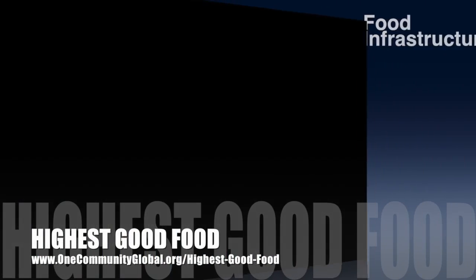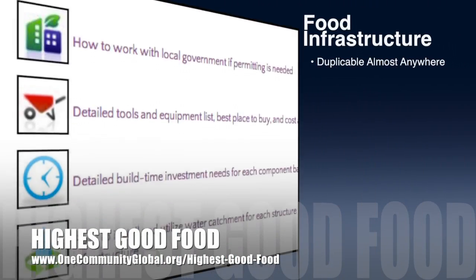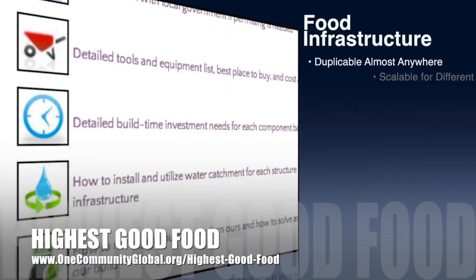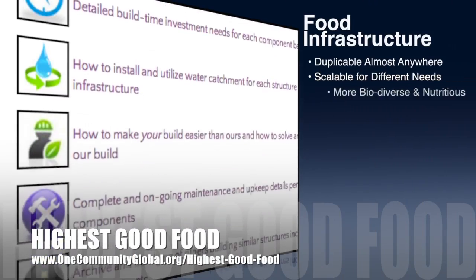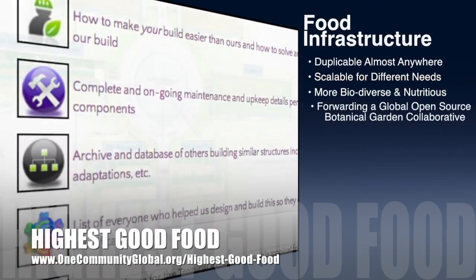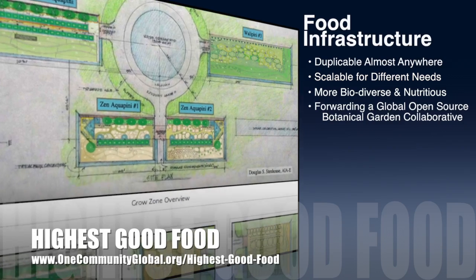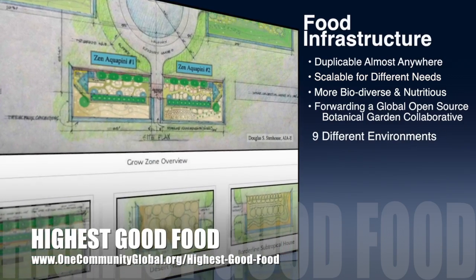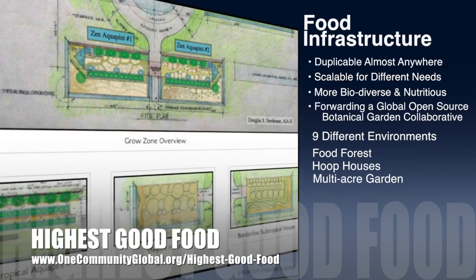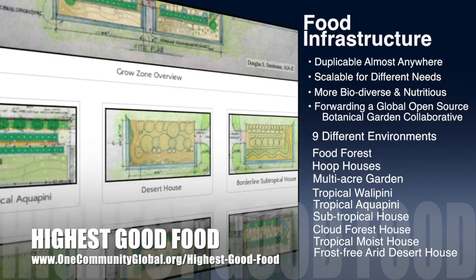One Community's approach to Highest Good Food is duplicable almost anywhere, scalable for different needs, more biodiverse and nutritious, part of forwarding a global open source botanical garden collaborative, and includes nine different free shared and duplicable growing environments.